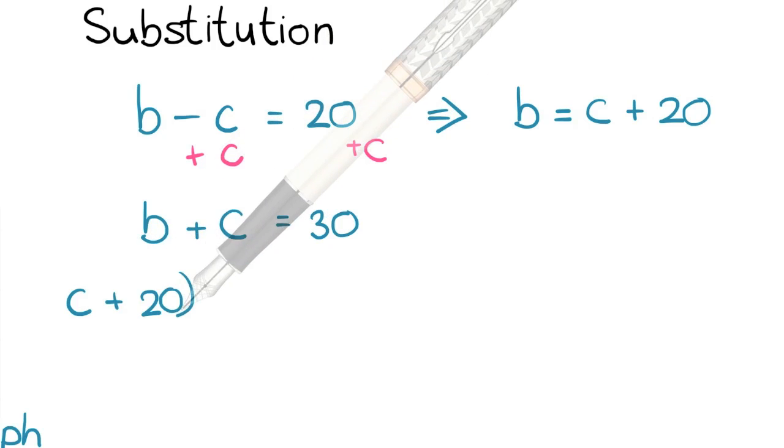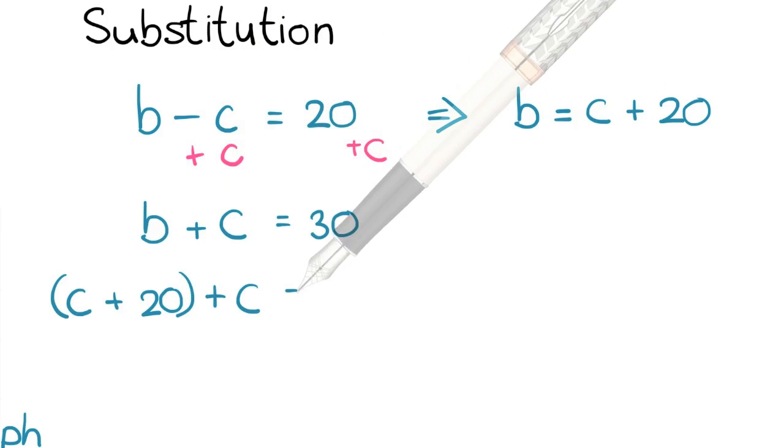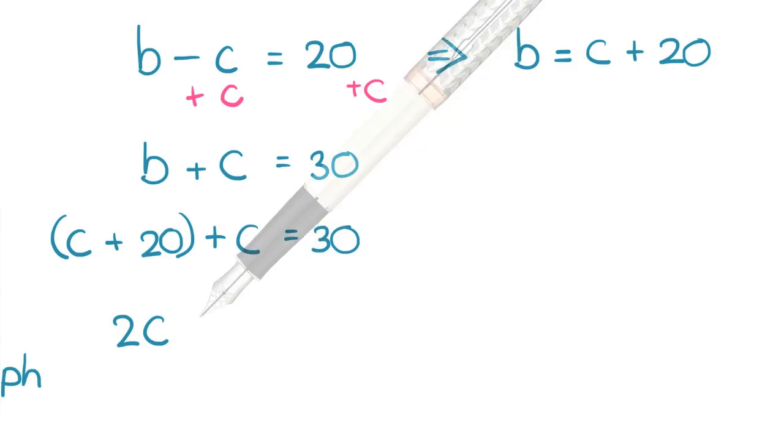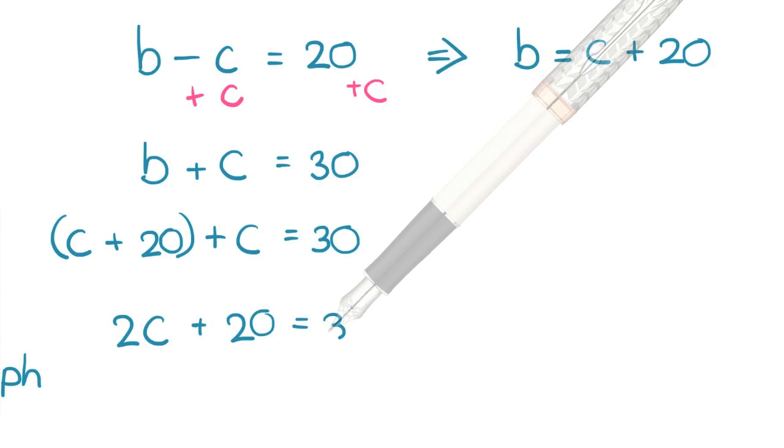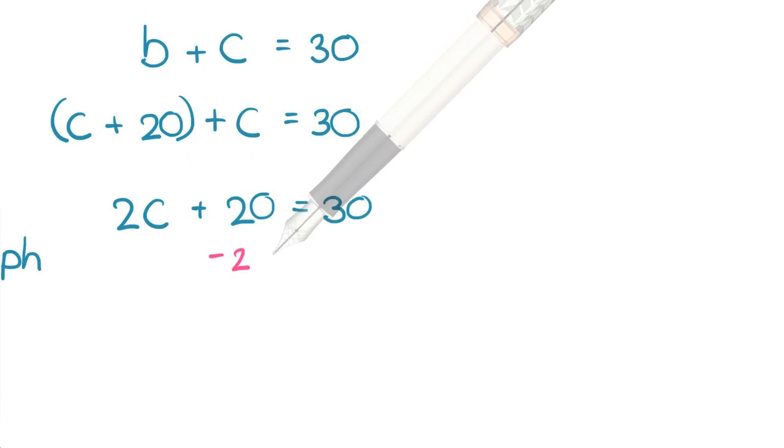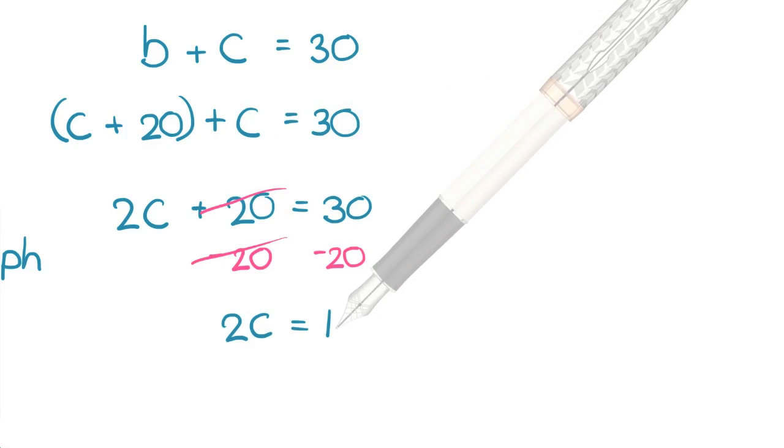And we have c plus 20 plus c equals 30. Combine like terms or similar terms. We have 2c plus 20 equals 30. Solve for c. Subtract both sides by 20, left us with 2c equals 10.